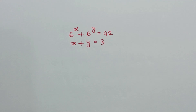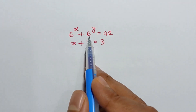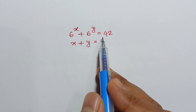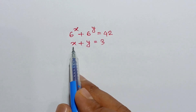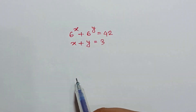Hi everyone. In this video I am going to show how to solve this system of equations: 6 to the power x plus 6 to the power y is equal to 42, and x plus y is equal to 3.